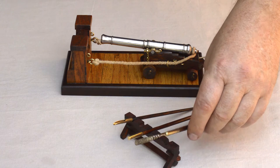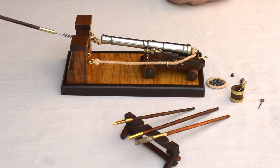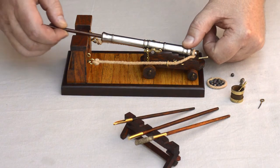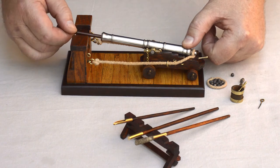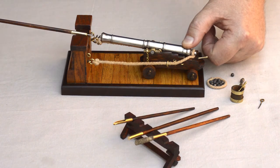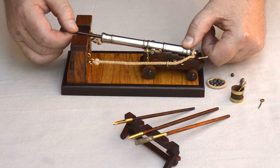Once the gun has been run inboard, we can commence with the loading procedure. We start with the gun being wormed. Using the worm, we will remove any smoldering remnant of the felt cartridge from the previous shot.